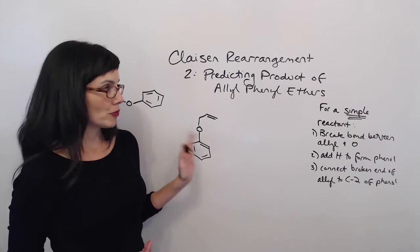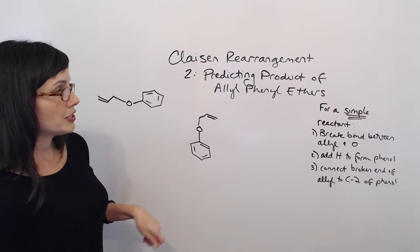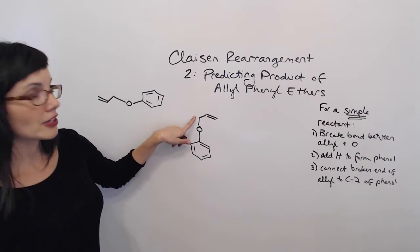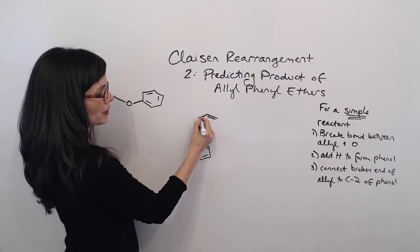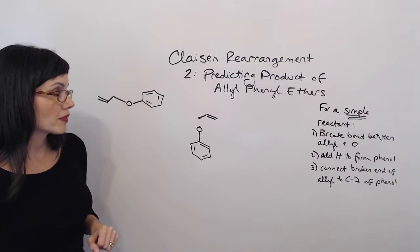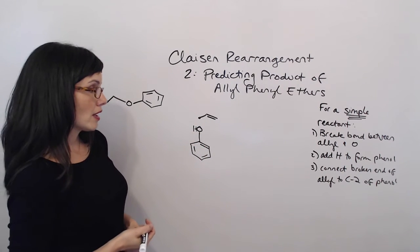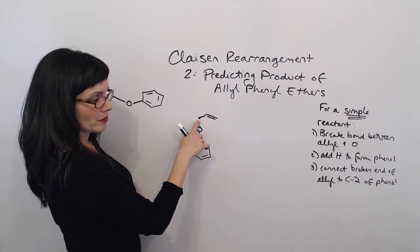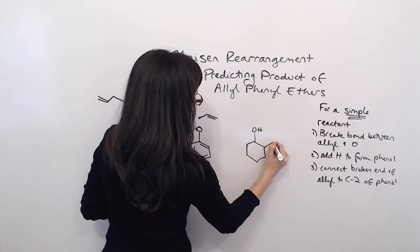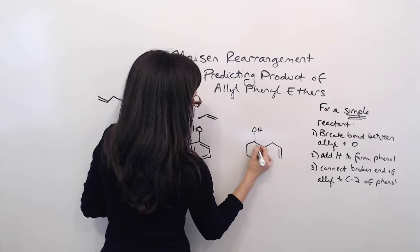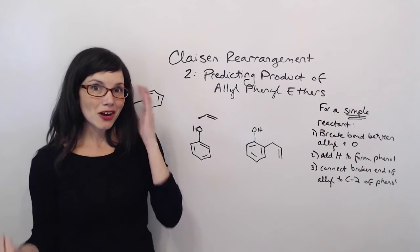Now that we've drawn this molecule, we're going to start the process of predicting the product. The first thing we're going to do is break the bond between the O and our allyl group — and really that just means erasing this bond. Now I'm going to mark this carbon that's like the broken end of our allyl group. I'm going to add an H to my O to make this into phenol. Then I'm going to connect this broken end of my allyl group to carbon 2 of my phenyl. And it's important to notice that this double bond isn't conjugated with the rest of the benzene ring — that's always going to be true.